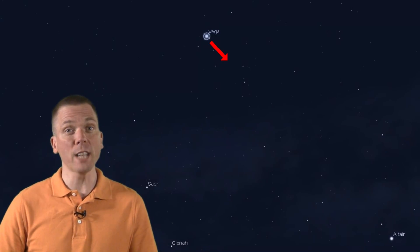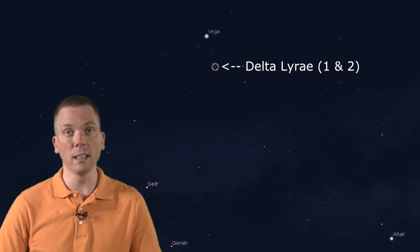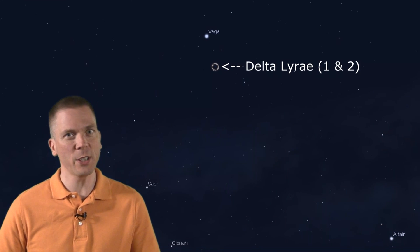From Vega, head towards Altair, past 4.3 magnitude Zeta, onto Delta Lyrae. Actually, Delta 1 and Delta 2. Delta 1 is the dimmer visually at 5.5 magnitude, but a hotter, blue spectral class B star, visible first on your way into this area.